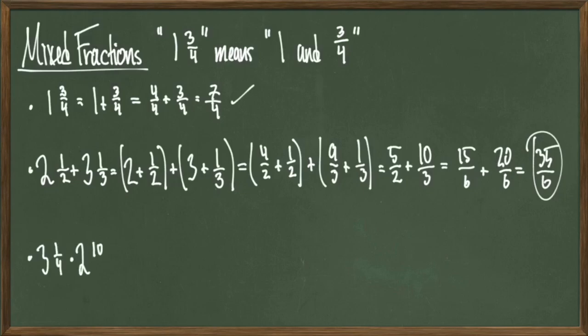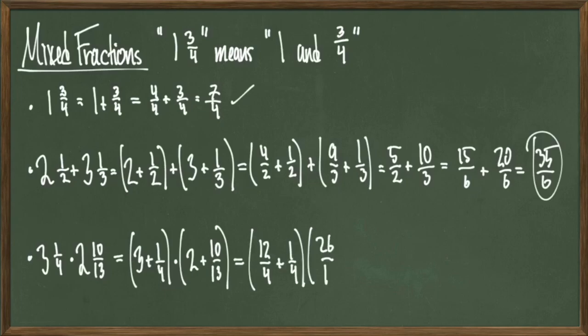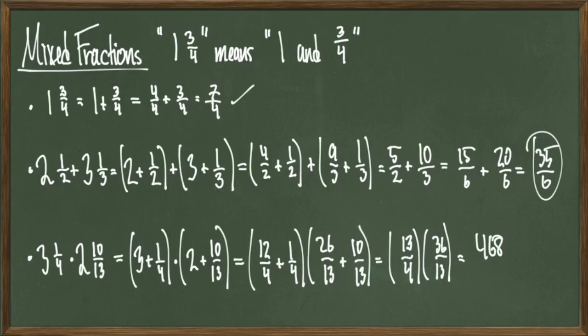For our last example, look at 3 and 1 fourth times 2 and 10 thirteenths. This looks like 3 plus 1 fourth times 2 plus 10 thirteenths. Order of operations says to add within the parentheses first. So, I'll find common denominators in both terms, which simplify down to 13 over 4 times 36 over 13. Multiply it out to get 468 over 52, which divided gives you 9, and we're done.